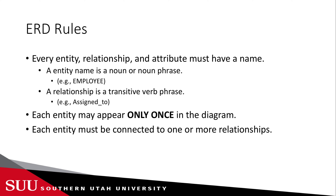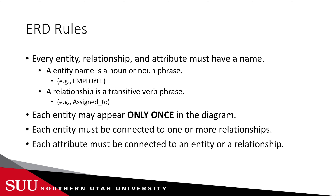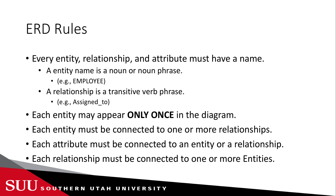Each entity must be connected to one or more relationships, so we cannot have an entity that is floating in the ERD. Each attribute must be connected to an entity or relationship — it has to be related to either an entity or a relationship. Attribute names cannot be repeated within the same entity. Each relationship must be connected to one or more entity, so we cannot have a relationship line that is not connected to anything.